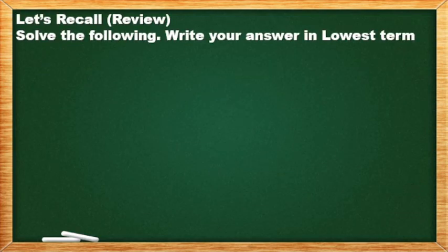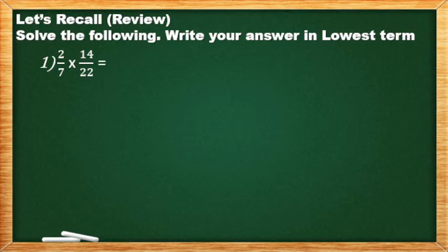Before we start our discussions, let's have a recall on how to multiply and divide fractions. So solve the following, write your answer in lowest term. Number 1: 2/7 times 14/22.